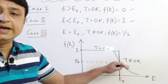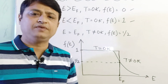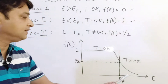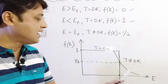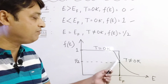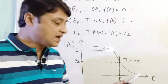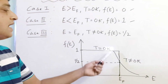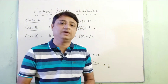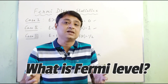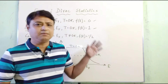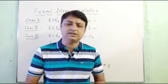For T > 0 Kelvin, the Fermi-Dirac distribution function looks like a smooth curve. When E is greater than Ef the value tends towards zero, and when E is less than Ef the value is one. This leads to an important discussion of what the Fermi level actually is, which is one of the most important questions covered in this video.